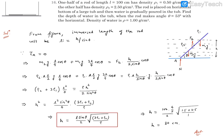So from here h² turns out to be L² sin² θ divided by 4 into 3ρ₁ plus ρ₂ divided by ρ.